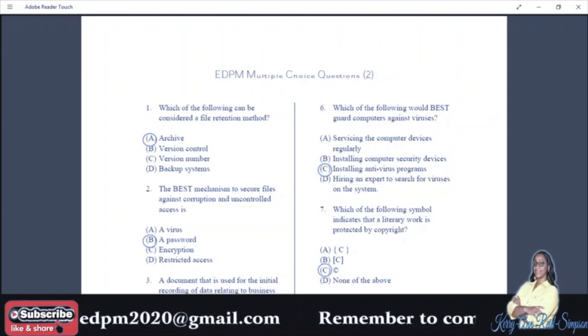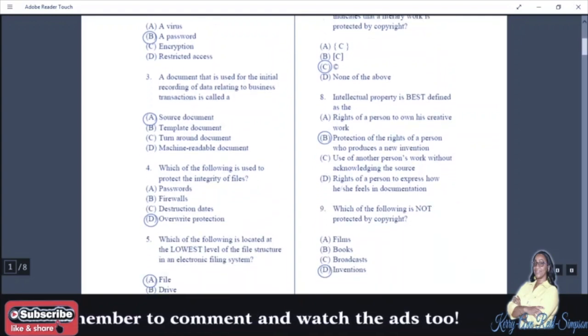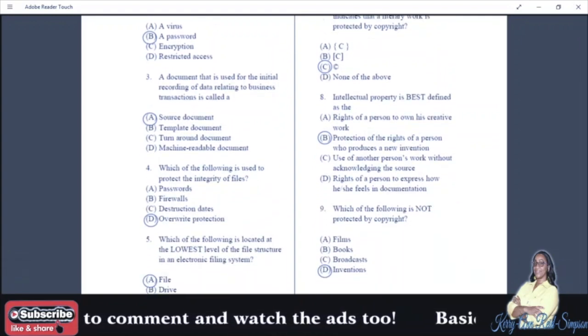Number three: a document that is used for the initial recording of data relating to business transactions is called: A: a source document, B: template document, C: turnaround document, D: machine readable document. And your answer is A, source document.